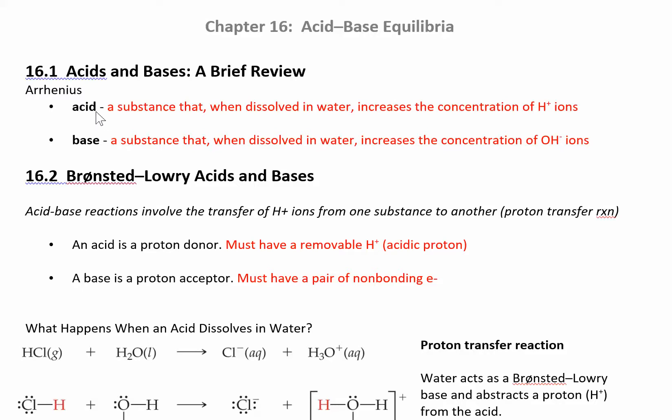The first definition comes from Arrhenius, and you may remember that name from kinetics, same guy. He said an acid is a substance that when you put it in water, when it dissolves in water, it's going to increase the H plus concentration of ions. And a base is something that when you put it in water and it dissolves in water, it's going to increase the OH minus concentration. So acids increase H plus and bases are going to increase the OH minus.